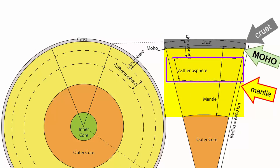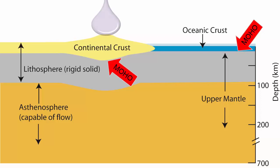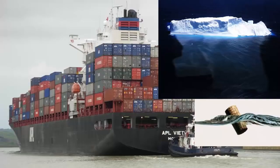Does the moho have anything to do with the asthenosphere? No. When we study the moho across the planet, it appears very close to the surface — at depths as low as 3 to 5 kilometers beneath the oceans — and as deep as 50 kilometers below the highest mountains. As material is added to or removed from the crust, it will adjust isostatically, much like icebergs or ships in the ocean.